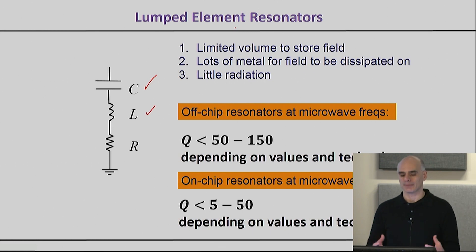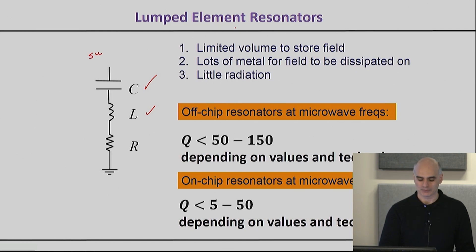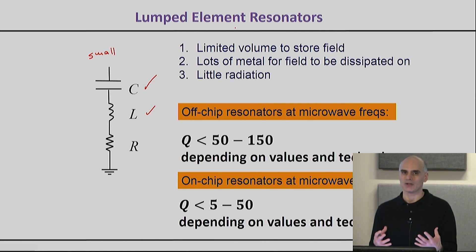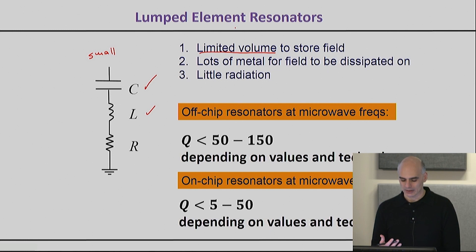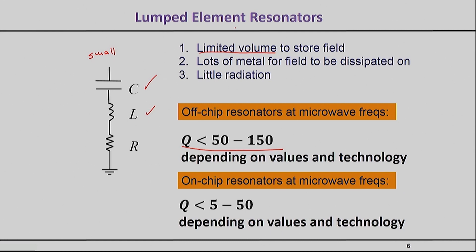When you make that choice, the great thing is that everything will be really small. In fact, you can even integrate inductors on the substrate and make everything very tight, very confined. But by making that choice, you're limiting the volume where you can store the field and increasing the surface area of metal where the field can actually be dissipated. So in general, if you choose relatively large off-chip resonators, you can maybe hope to get something in the order of a Q of 100.